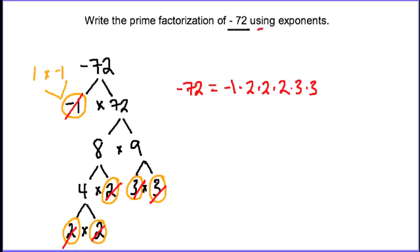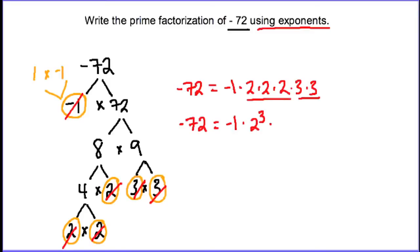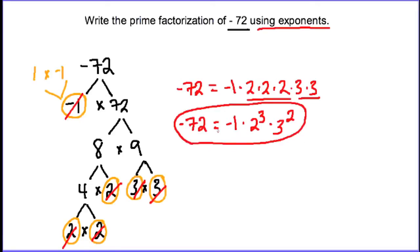Since the question asks us to use exponents, we group together the repeated factors. Negative 1 is by itself, we have three 2's giving us 2 to the power of 3, and two 3's giving us 3 to the power of 2. This is the prime factorization of negative 72 using exponents.